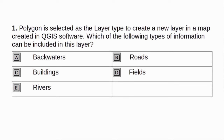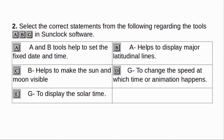Part 2. Polygon is selected as the layer type to create a new layer in a map created in QGIS software. Which of the following types of information can be included in this layer? A. Backwaters. B. Roads. C. Buildings. D. Rivers. Answer: A and D.